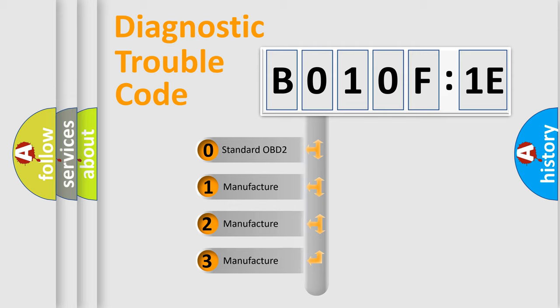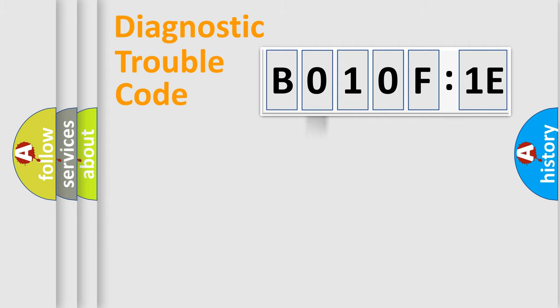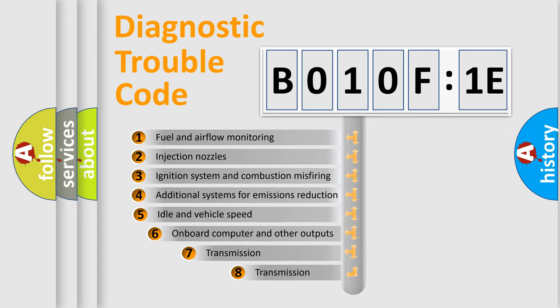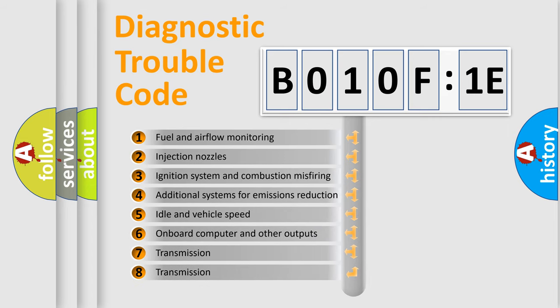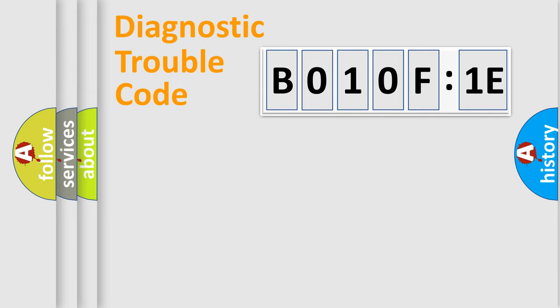If the second character is expressed as 0, it is a standardized error. In the case of numbers 1, 2, or 3, it is a more prestigious expression of the car-specific error. The third character specifies a subset of errors. The distribution shown is valid only for the standardized DTC code. Only the last two characters define the specific fault of the group.